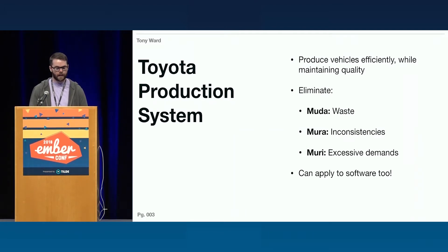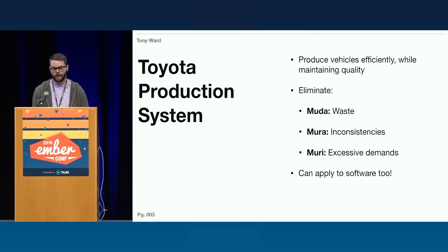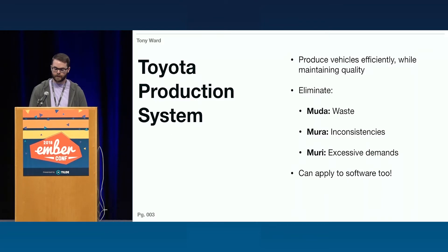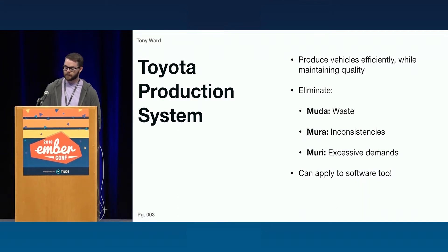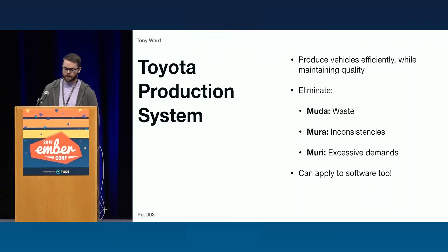We actually took a look at the Toyota Production System, or TPS, and TPS is all about producing vehicles efficiently while maintaining high quality. TPS says you should continually try to eliminate three things: Muda, which is waste; Mura, which are inconsistencies; and Muri, which are excessive demands, both on people and on systems. And this doesn't just apply to manufacturing cars — you can apply this to software as well.